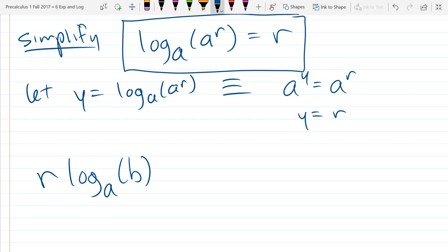So our last identity, I'll just write down here. So if your base does not match the inside, the input to the log, you can still move the r inside as an exponent like this.